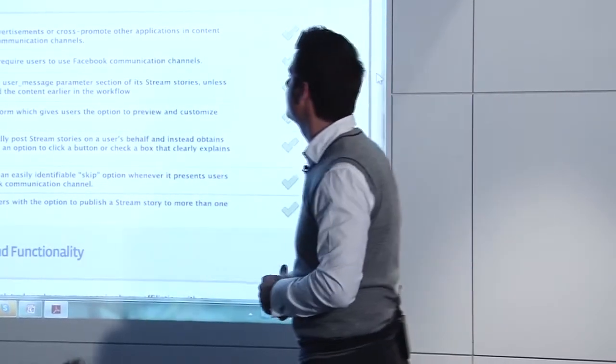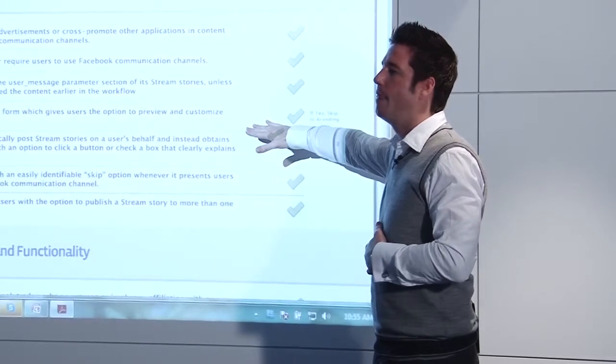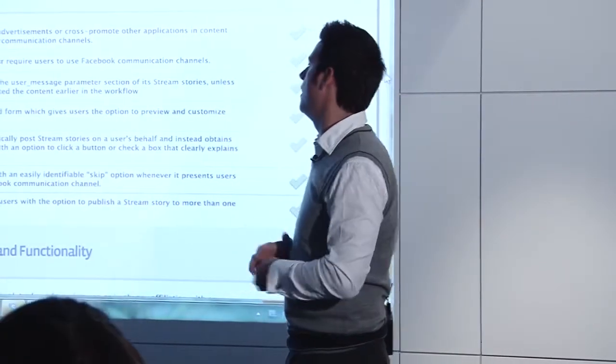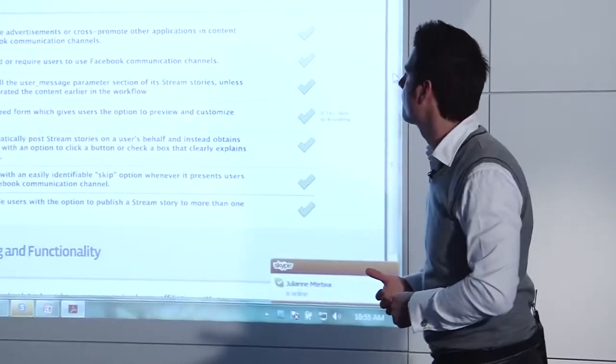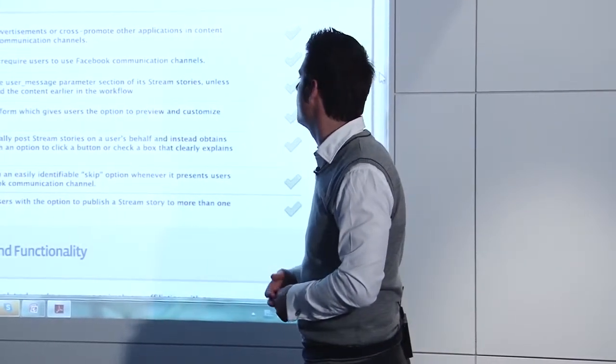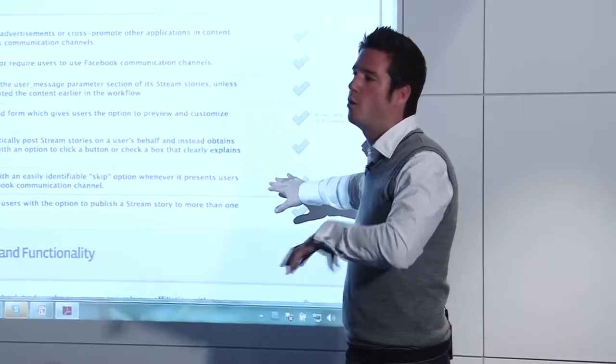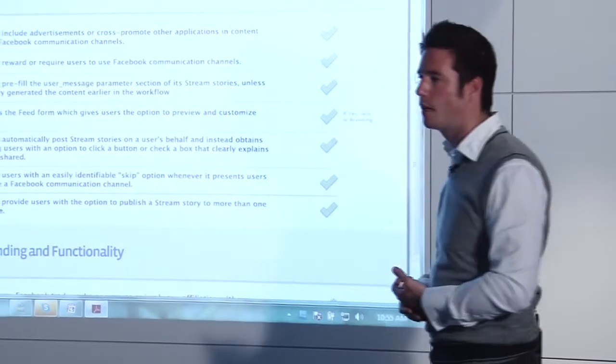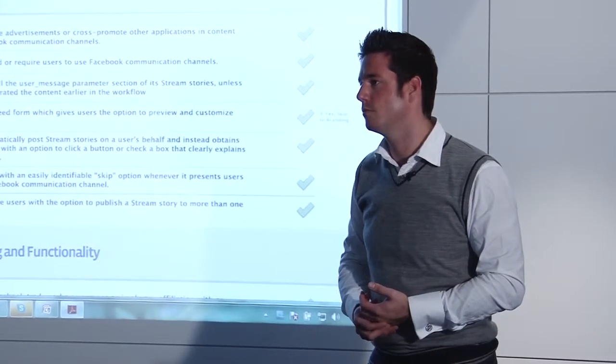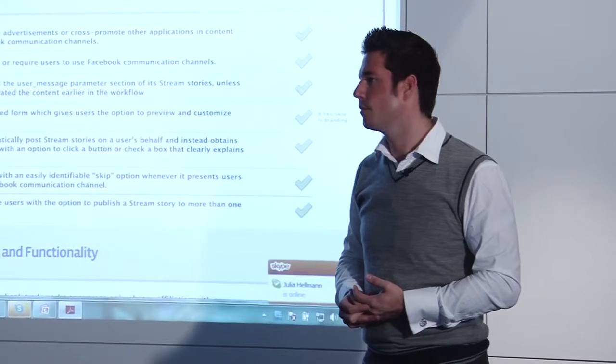Application only uses the feed form, which gives the users the option to review and customize their post. Just on that, if you have an application that requires people to fill out their personal details, there also needs to be terms and conditions and disclaimers on that in order for it to be approved. Application does not automatically post stream stories on a user's behalf, and instead obtains users' consent. Providing users' option to click a button or check a box. The user needs to be able to post that content themselves onto the newsfeed. It won't automatically happen from the application. Does Facebook need to actually approve your terms and conditions? No. So if I approve my terms and conditions, I will use your email address and send you a weekly newsletter for the next year. Like, that's your terms and conditions, but Facebook has no control over that. That's all terms and conditions. I mean, we'll probably look at it.